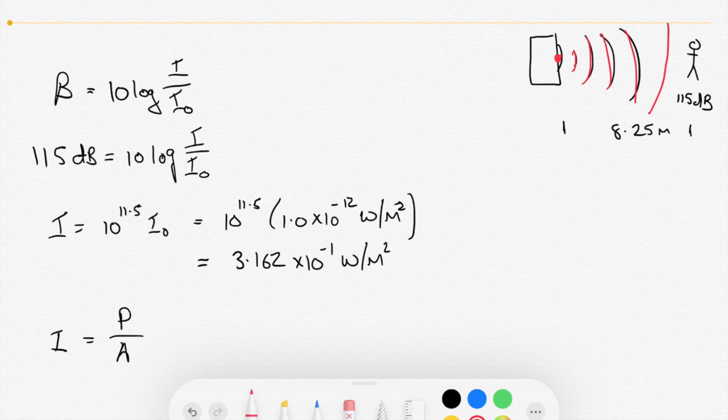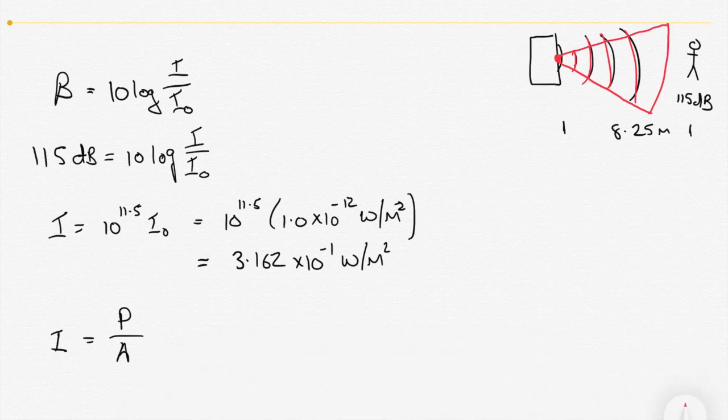And if we've got the radius, so we know what the radius is at the point we're standing. It's 8.25 meters. So we can figure out the area of the sphere of sound that's coming out. And that's the area that we're looking for. So we're looking at what's the area at 8.25 meters. That's going to allow us to calculate the power. So if we rearrange that equation then.